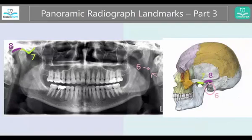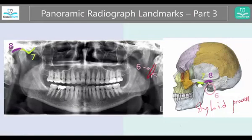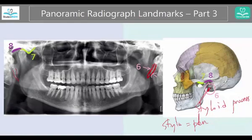Let's look at number six now. Number six is this kind of pointy area. This is called the styloid process. In French, 'styloid' actually means pen, and it looks like a pointy pen. If you have another memory trick, feel free to use it. But this pointy area is going to serve as an attachment for different ligaments towards the jaw. So this pointy area that is a little less visible on this side is over here.